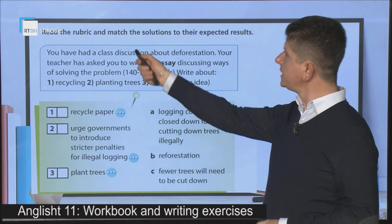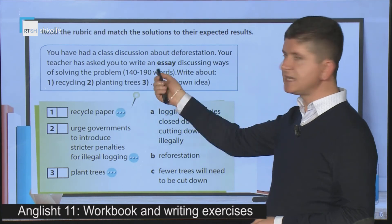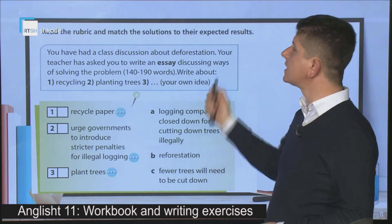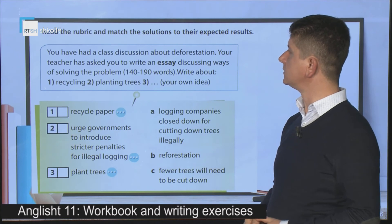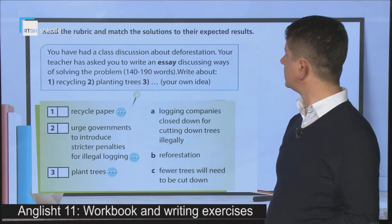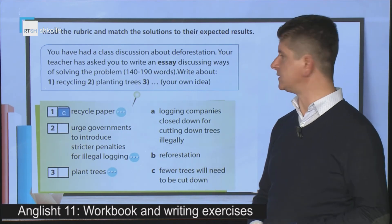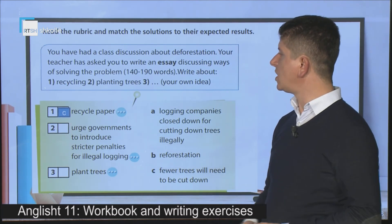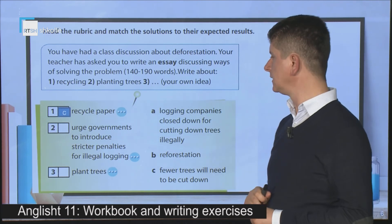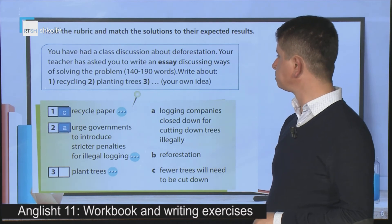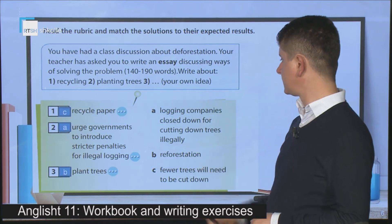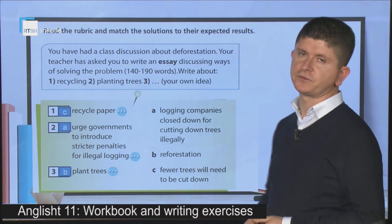Let's look at another exercise related to writing an essay providing solutions to problems. Read the rubric and match the solutions to their expected results. The rubric says: 'You have had a class discussion about deforestation. Your teacher has asked you to write an essay discussing ways of solving the problem, 140 to 190 words. Write about recycling, planting trees and your own idea.' The first solution is recycled paper and its result is C — fewer trees will need to be cut down. The second solution is for governments to introduce stricter penalties for illegal logging, and its result is that logging companies are closed down for cutting down trees illegally. The last solution is planting trees, which goes with B — reforestation, not deforestation.